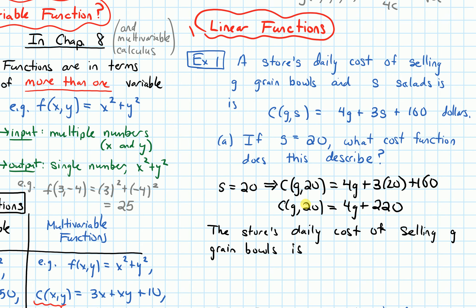The fact that we plugged in S is 20 means that we're assuming that the number of salads is fixed at 20. So I'll make a note of that at the end of this sentence. So the store's daily cost of selling G grain bowls is 4G plus 220 dollars if the number of salads is fixed at 20. And that's our answer that describes this cost function.